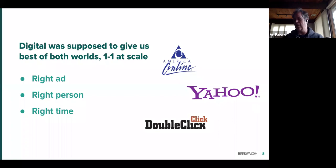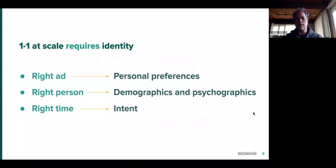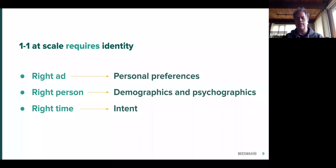This history lesson kind of goes into the early era of digital, where we were looking at this incredible promise: the right ad to the right person at the right time. And effectively the promise was that we would get them both at scale — we'd be able to do direct response-like techniques for branding at scale. That's what motivated so much investment and time in this digital revolution, which is now the second largest form of media in most markets after TV. But without identity, a lot of this breaks down, because one-to-one at scale requires identity. Implicit in right ad, right person, right time is data and identity.